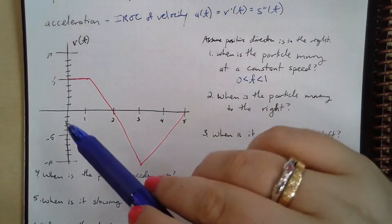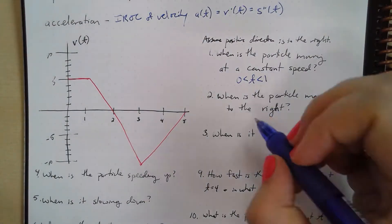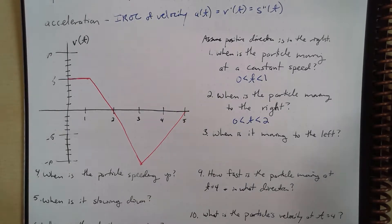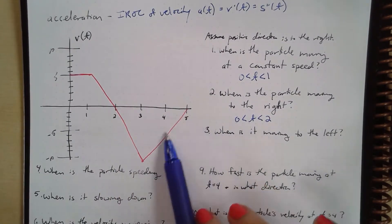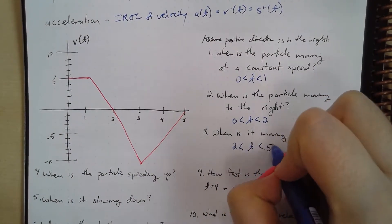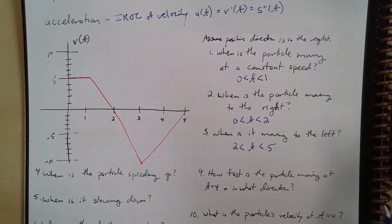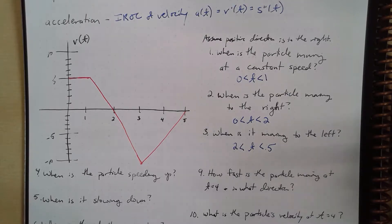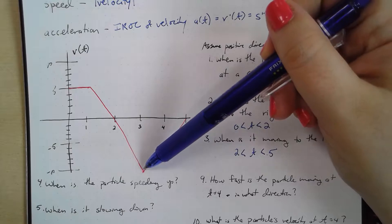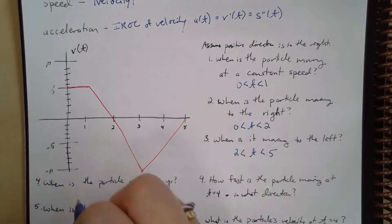When is the particle moving to the right? Since positive velocity means moving right, that's from 0 to 2. When is it moving to the left? The velocity is negative from 2 to 5, so 2 < t < 5. When is the particle speeding up? That happens when velocity and acceleration are in the same direction. Here the velocity is negative and the slope (acceleration) is also negative from 2 to 3, so the particle is speeding up during 2 < t < 3.